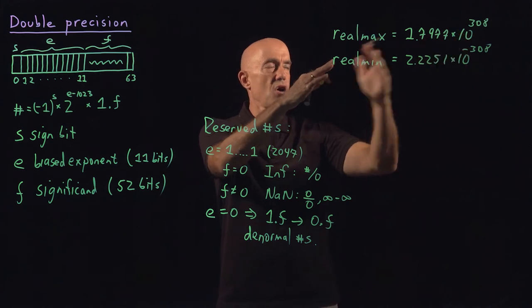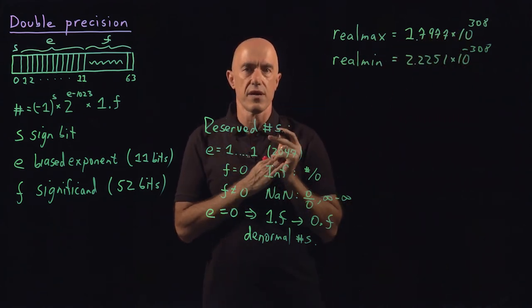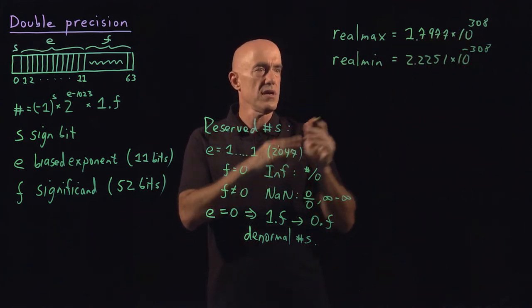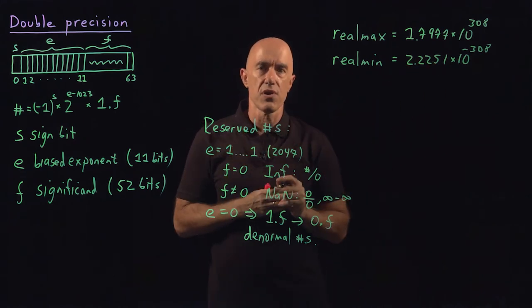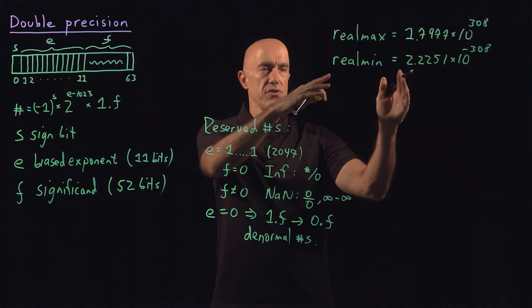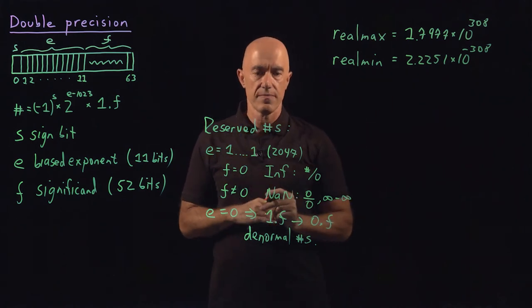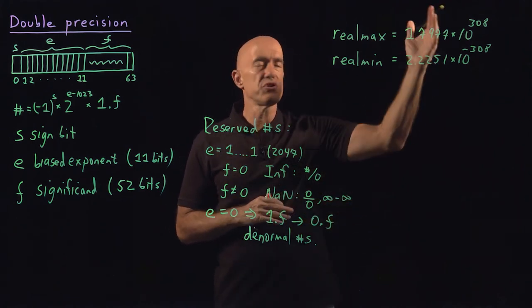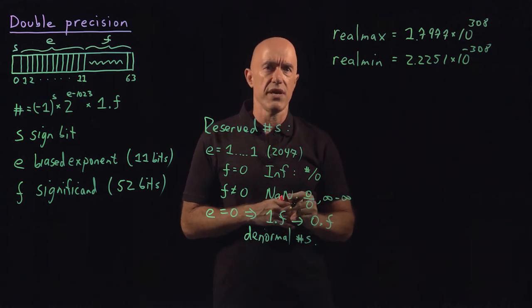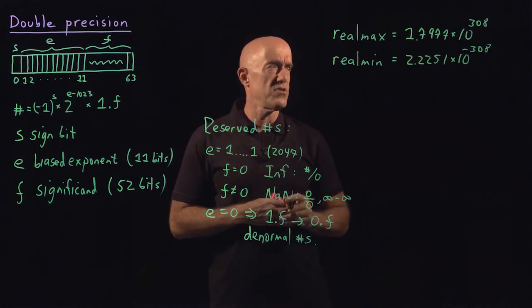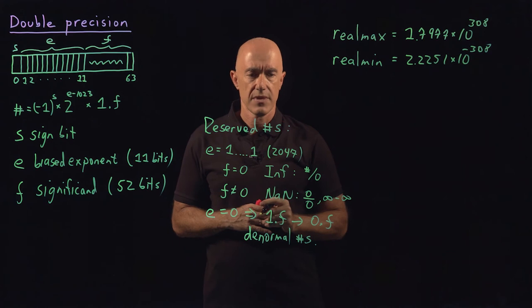So this is the largest number that you can represent in the computer. This is the smallest number before you enter the denormal numbers that you can represent in the computer. Usually the range of numbers here is wide enough that you don't run into any trouble.